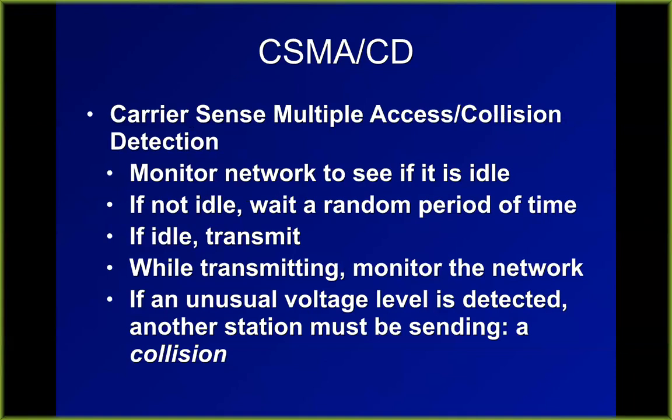The Ethernet protocol uses carrier sense multiple access collision detection (CSMA/CD). Ethernet sends a signal down the wire with almost no attenuation, so you know what voltage to expect. In a simplified model, a zero bit is zero volts and a one bit is five volts; if two devices transmit simultaneously, the voltage jumps to ten volts — outside the expected range — proving a collision occurred. It then sends a jamming signal to tell all devices to stop transmitting and retransmit at a random time later to avoid another collision.